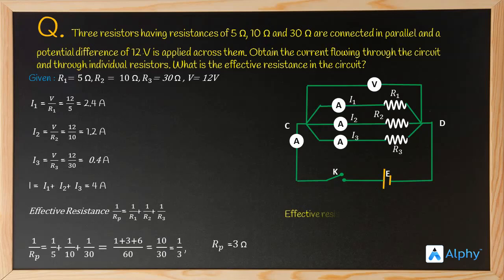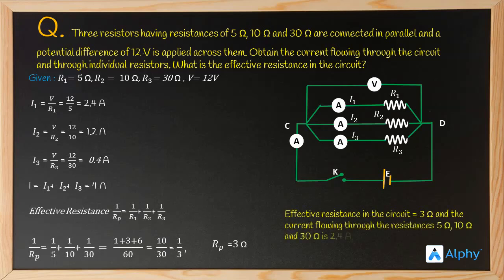So the effective resistance in the circuit is 3 ohms. The current flowing through each resistance — 5 ohm, 10 ohm, and 30 ohm — is 2.4, 1.2, and 0.4 ampere respectively. The total current flowing through the circuit is 4 ampere.